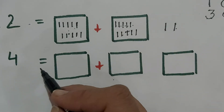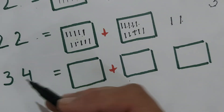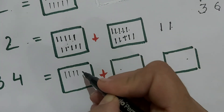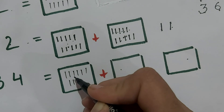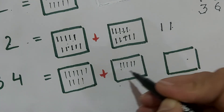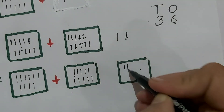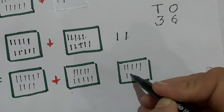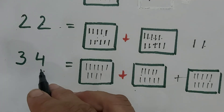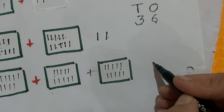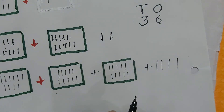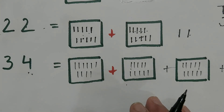Now we have not done 34. How many tens? 3 tens. For 3 tens we will draw 3 squares, and inside each we will draw 10 lines. How many ones will we draw? 4 ones — 3 tens and 4 ones.